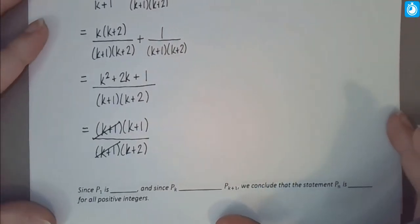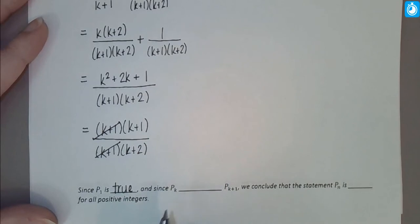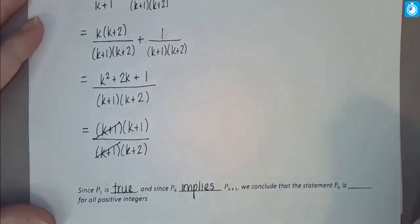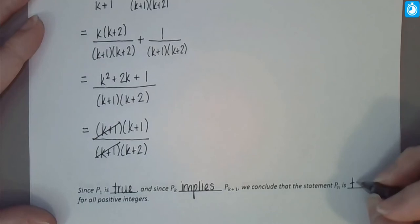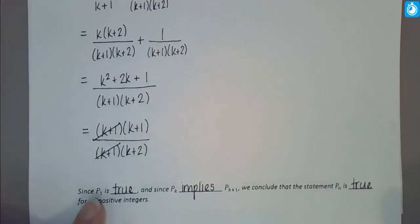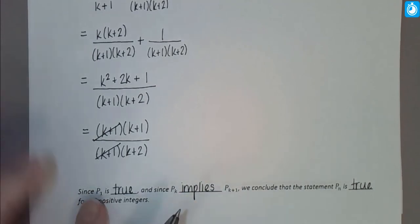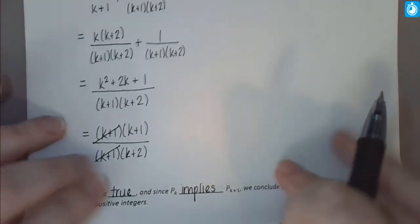That proves our statement. We showed P sub 1 is true, and since P sub k being true implies P sub k plus 1 is also true — meaning any case implies the next — we conclude the statement is true for all positive integers.